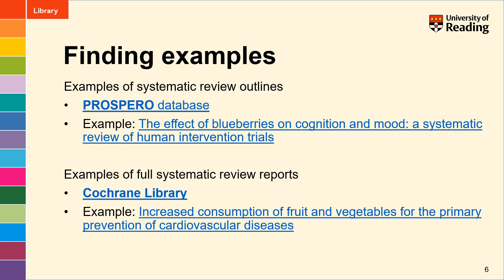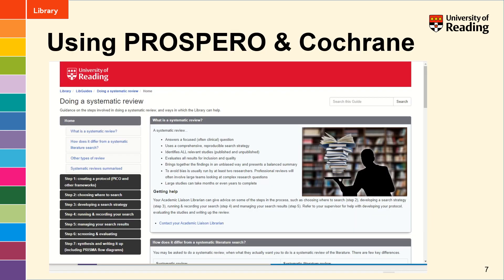If you're not sure what a systematic review is or how to draw up a protocol for a review, there are a couple of places you can look to find examples. The Prospero database gives systematic review outlines — the example I'll show you in a moment is on the effect of blueberries on cognition and mood. And then the Cochrane library gives you full write-ups of systematic reviews so you can see exactly what goes into writing a professional systematic review and how that is laid out and how the appendices are used to record search strategy. You can find links to both Prospero and Cochrane on our systematic review guide — just scroll down and on the left of the screen there's a box to find existing systematic reviews.